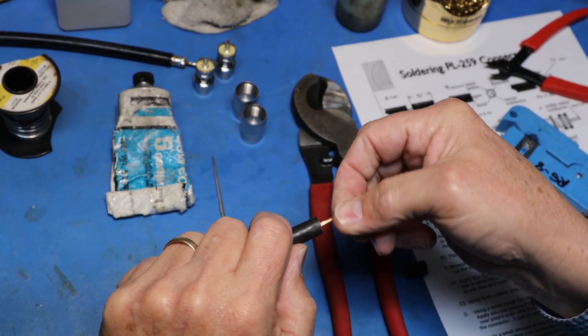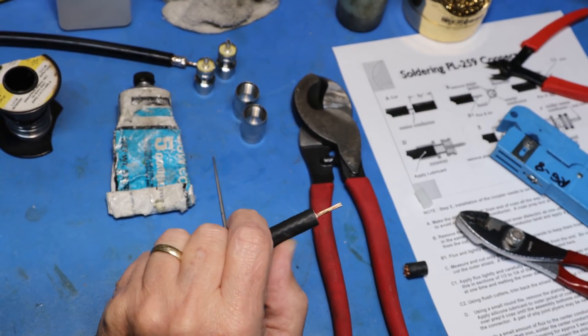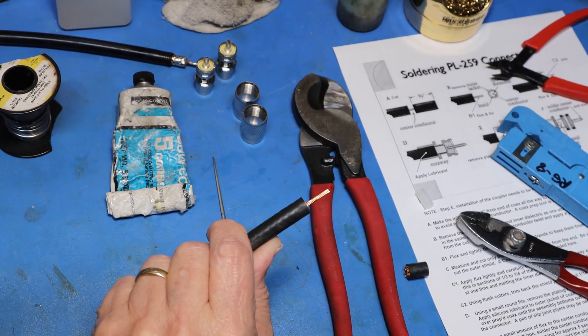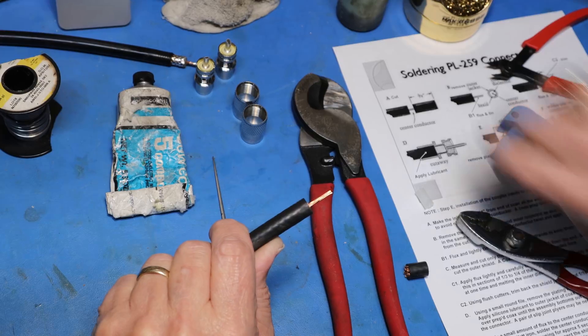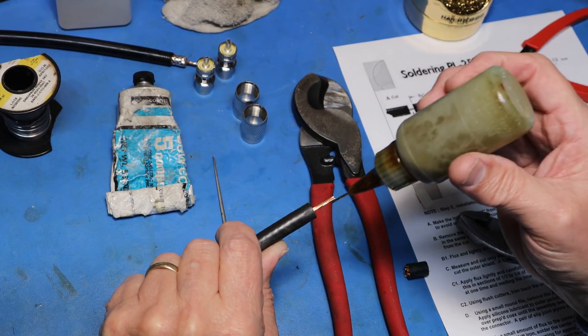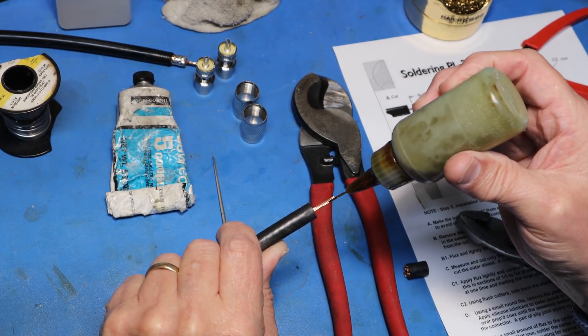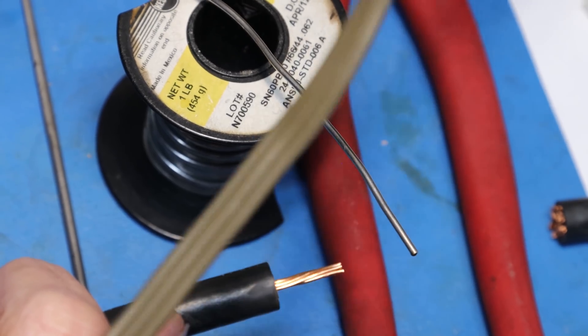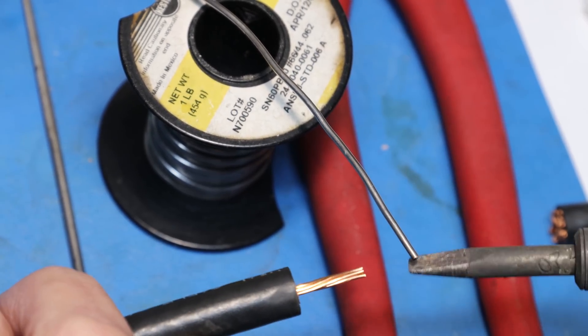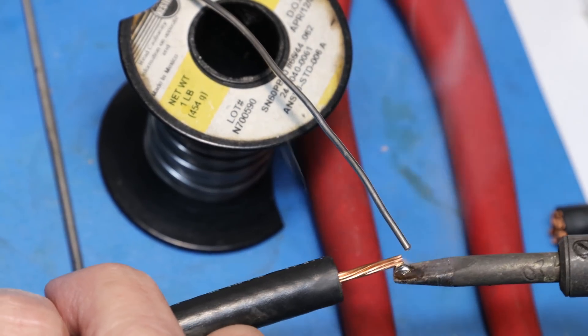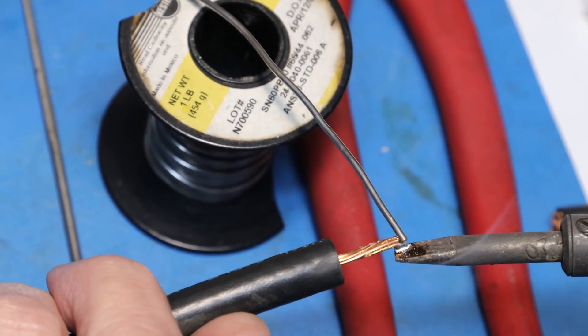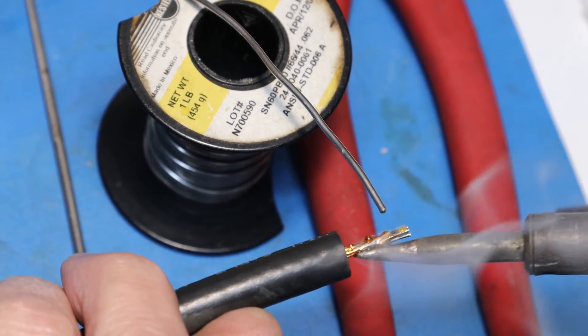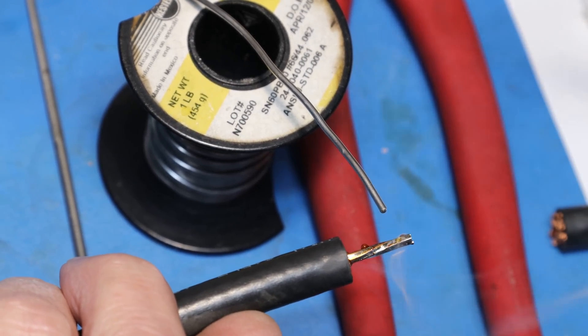Now that we have removed the center dielectric, we have exposed the center conductor. I like to take the opportunity to go ahead and apply a little flux, followed by a quick tinning of that center conductor to keep it from untwisting during the rest of the connector assembly. It doesn't take a lot here, just a light tinning of the center conductor.